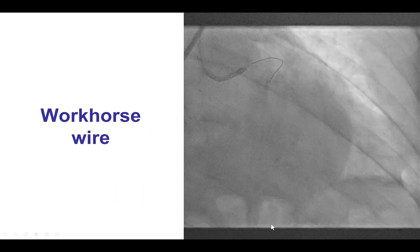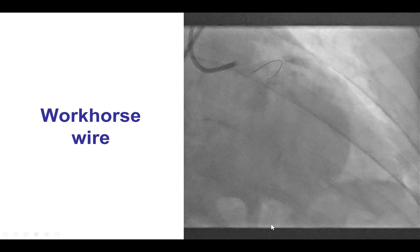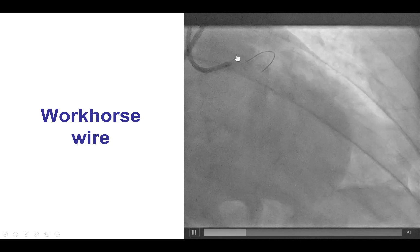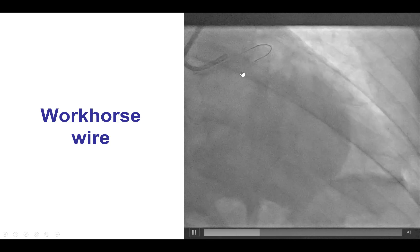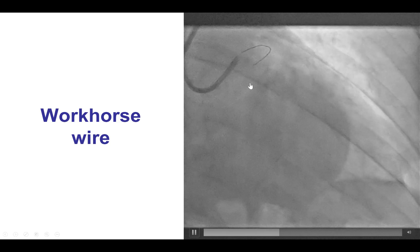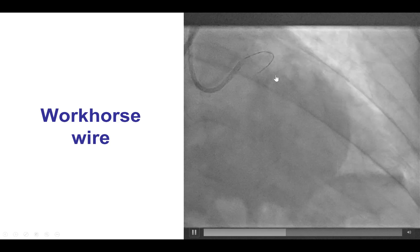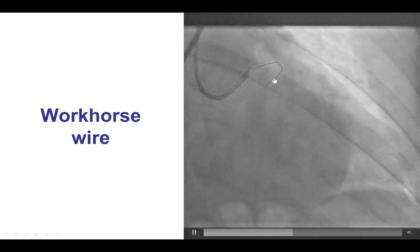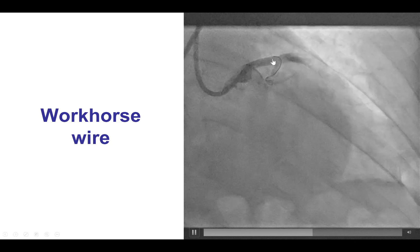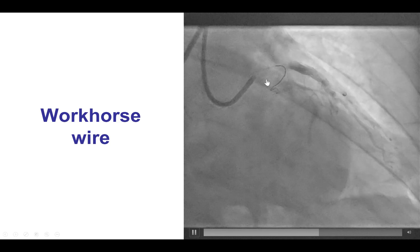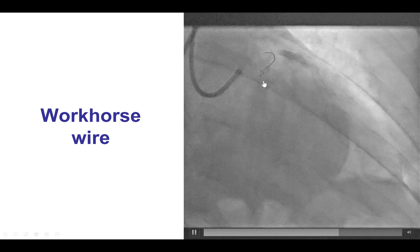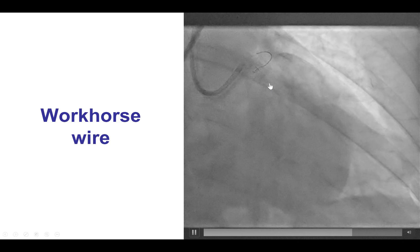But sometimes things may work better than expected. These are repeat attempts, still using a Workhorse Xion Blue guide wire. There is essentially a 180-degree bend, but slowly the wire seems to be taken through the first bend and the second bend, and now the tip is prolapsed.